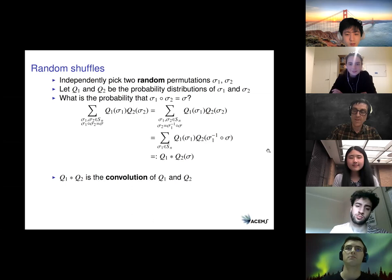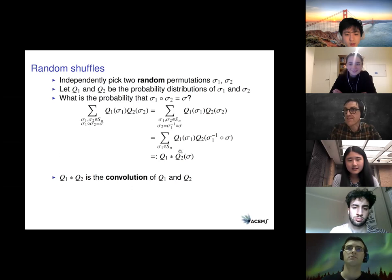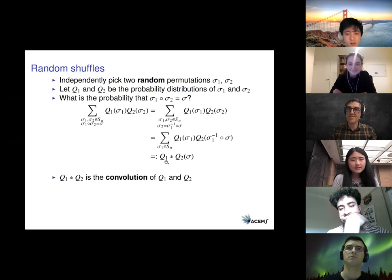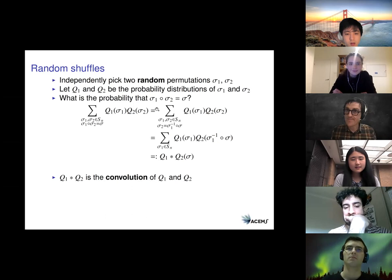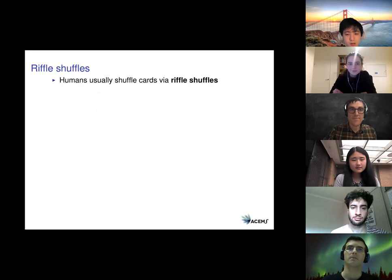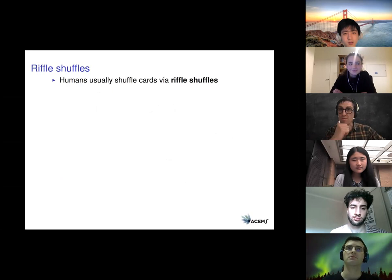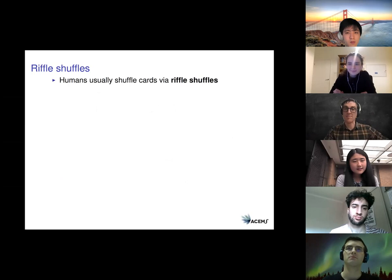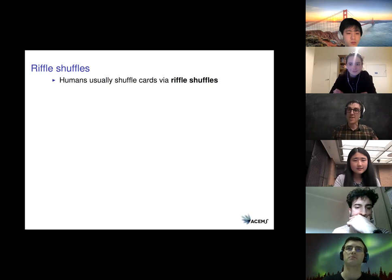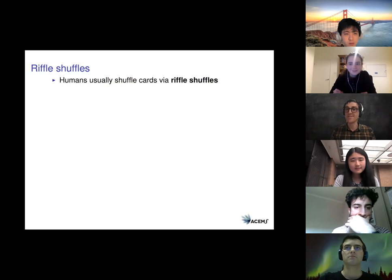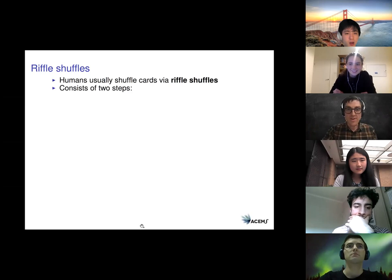All of this so far has been quite general — we haven't said anything specific about what kinds of shuffles we've been talking about. But in practice people generally do fairly specific things when they say they're going to shuffle a deck of cards. What we really want to talk about is the riffle shuffle. A riffle consists of two steps, and I'm going to try and demonstrate a real shuffle for you.